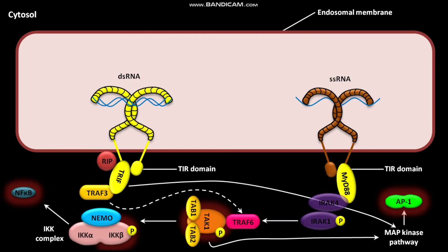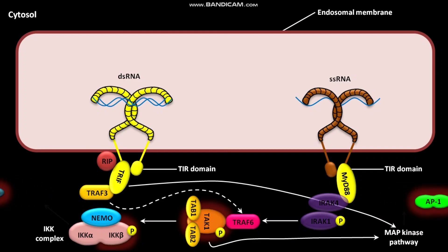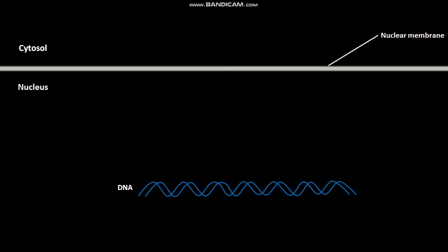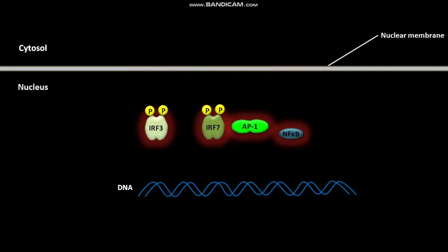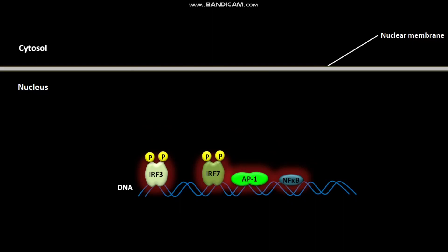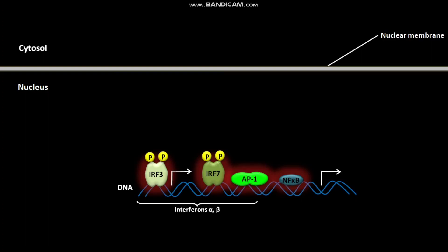The active NF-KB and active AP1 dimer move towards the nucleus. The phosphorylated active IRF3, IRF7, active AP1, and active NF-KB all move into the nucleus, where they bind to specific regions of DNA and cause transcription of genes encoding interferon alpha, interferon beta, and also genes encoding cytokines, chemokines, and antimicrobials.